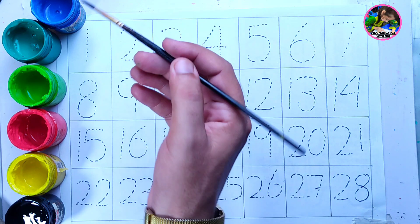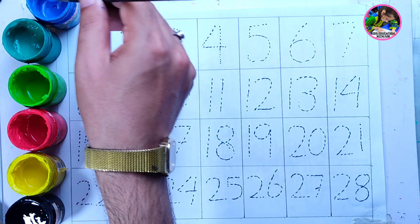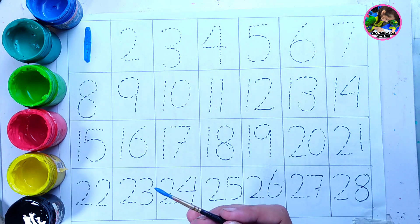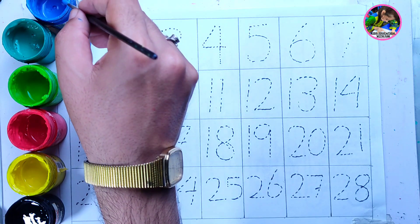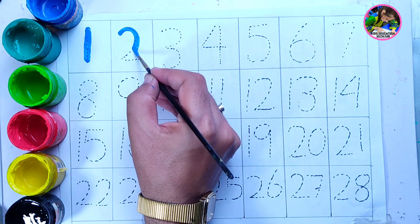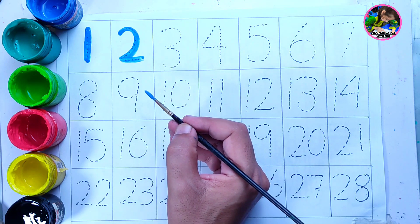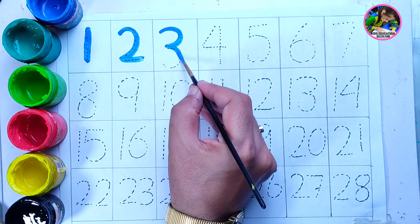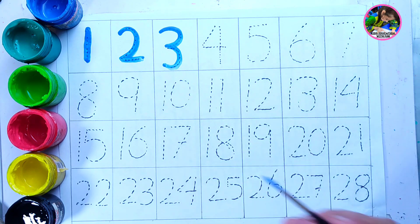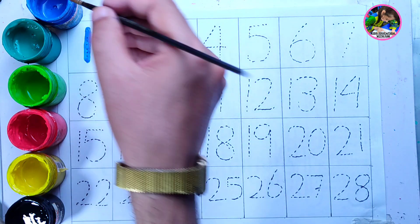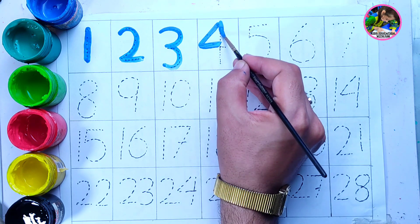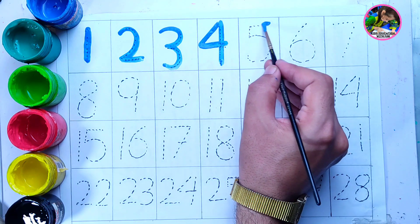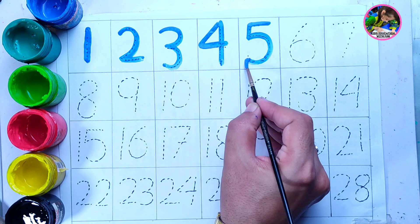The first color is dark blue color, this is dark blue color. Number 1, 2, number 2, 3, 4. You also do the same practice. Number 5.